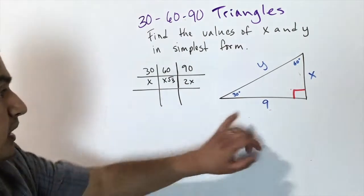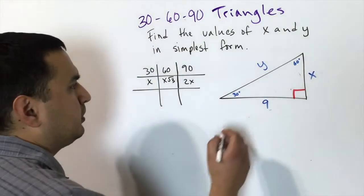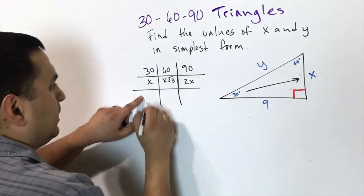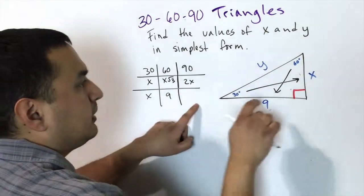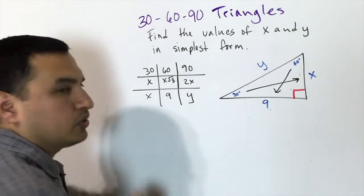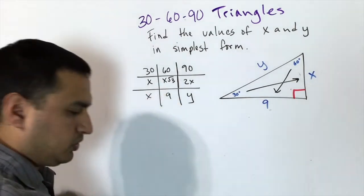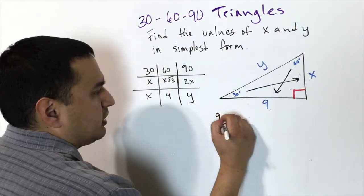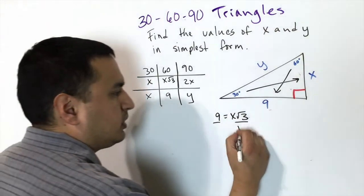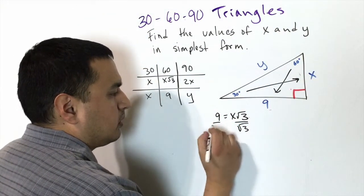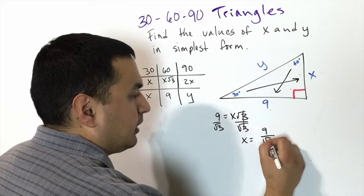Here's an example: the side given is 9, and we want to find x and y. We label the sides according to the pattern — across the 30° is x, and the given value 9 goes across the 60°, which means 9 = x√3. We need to divide both sides by √3, giving x = 9/√3.